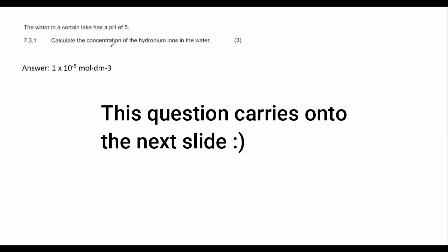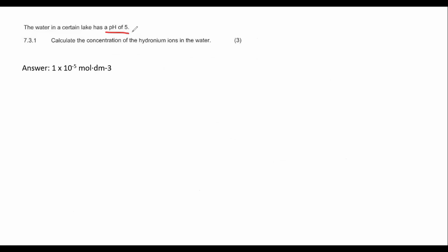The water in a certain lake has a pH of 5. Calculate the concentration of hydronium ions in the water. We know that hydronium is H3O positive. Now we know that pH is equal to minus log of concentration H3O positive. We are also told that the pH is 5, so we can say 5 equals negative log concentration of H3O positive.